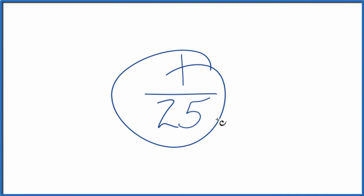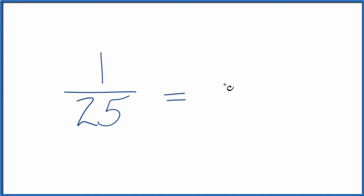Let's write the fraction 1/25 as a decimal, and there's two ways we could do it. First, we could just divide 1 by 25 on our calculator, and we'd end up with 0.04.